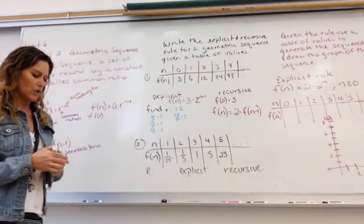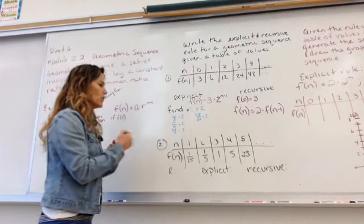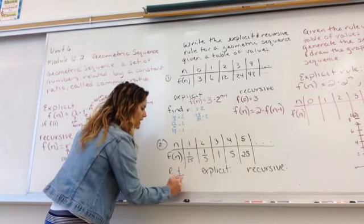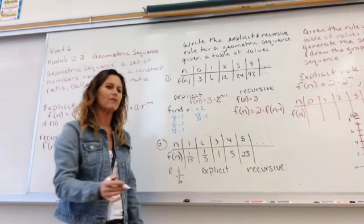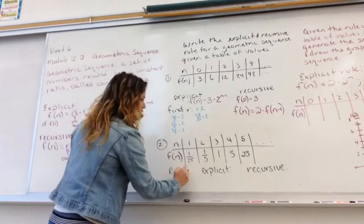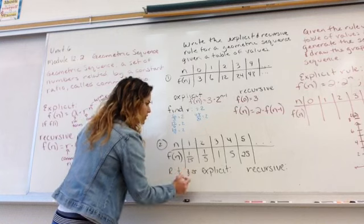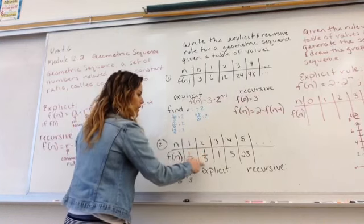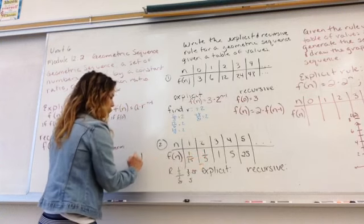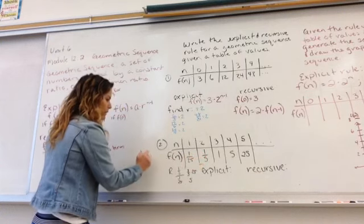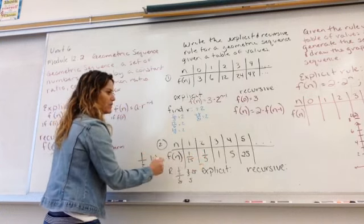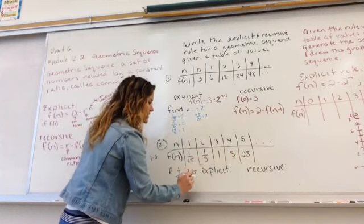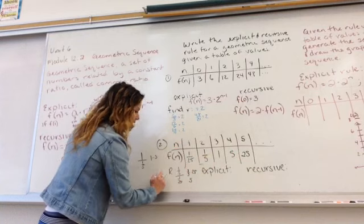We're going to look at another one. This one has some fractions in it. So when we do our common ratio, we want to go 1 fifth divided by 1 over 25. Remember, we don't divide fractions, we flip it and multiply. So that's 1 over 5 times 25, which is 5. If we take 1 and divide it by 1 fifth, flip it over, multiply. 1 times 5 is 5. 5 divided by 1 is 5. 25 divided by 5 is 5. So r in this case is 5.